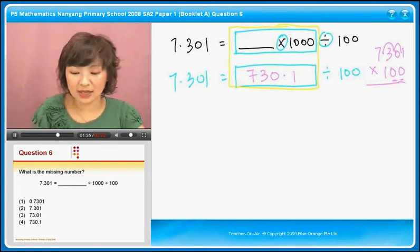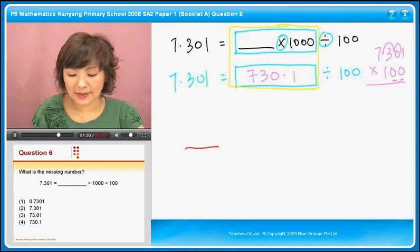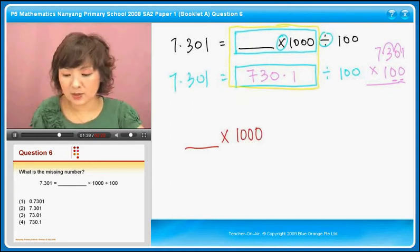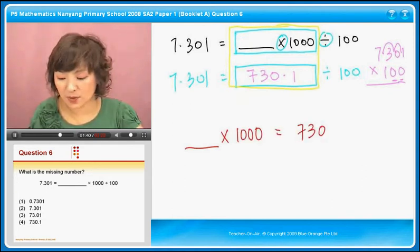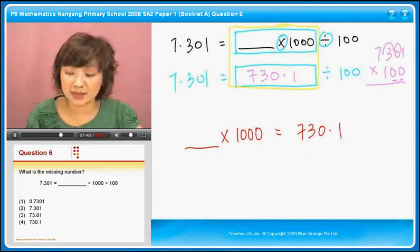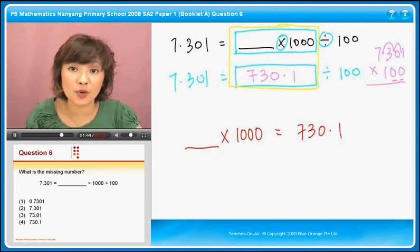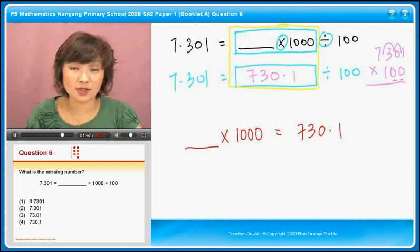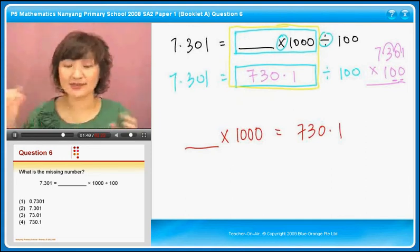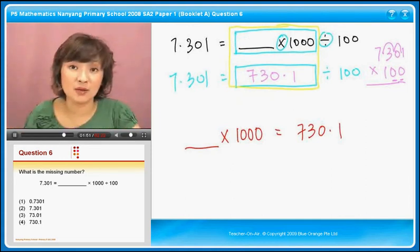So I will pull it down. I will say, okay, blank times 1,000 is equal to 730.1. Should the number be bigger than 730.1 or smaller? Smaller. You have to take a small number times 1,000 to get 730.1.